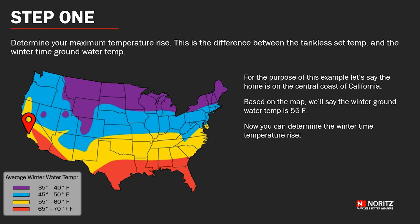Now you can determine the wintertime temperature rise. We'll assume a 120 degree set temperature, as that's hot but not scalding. Subtract the 55 degree groundwater temperature and you get 65. This is your temperature rise.